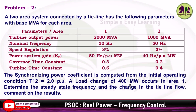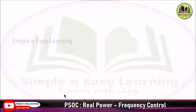A load change of 400 MW occurs in area 1, that is ΔPD1 = 400 MW. We need to determine the steady-state frequency deviation ΔF_stat and the change in tie line power flow ΔP_tie.